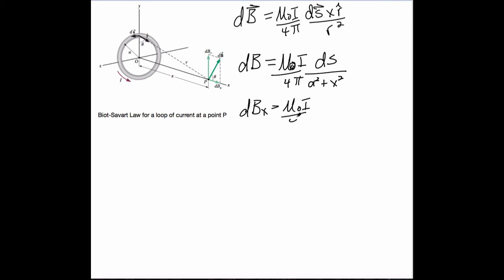So DBX is all of that stuff. Mu naught I over four pi times DS over A squared plus X squared, but it's the cosine of theta. So we only need this guy. Here's our, the main, here's the vector, here's the component X. That is theta, so it's cosine.